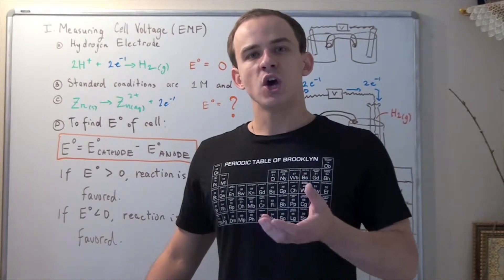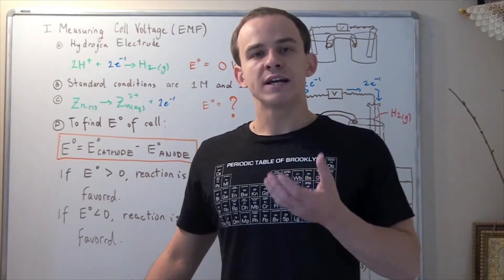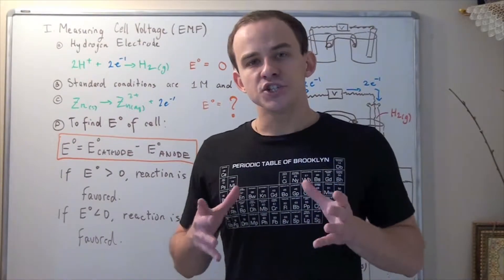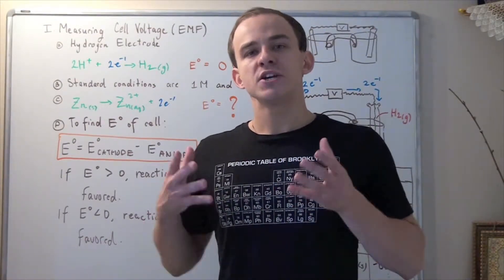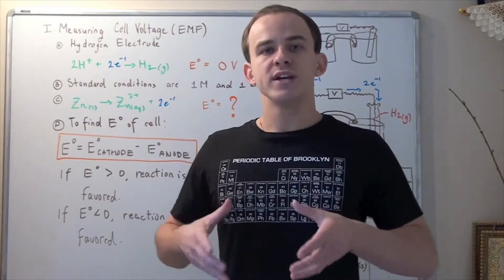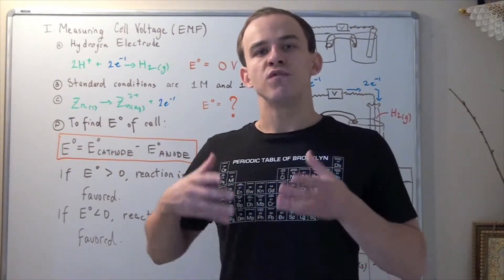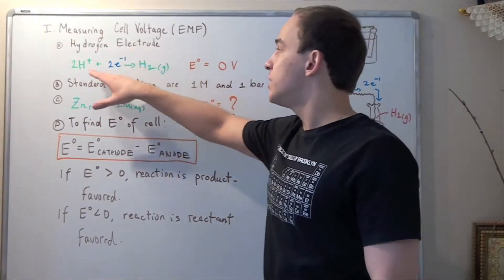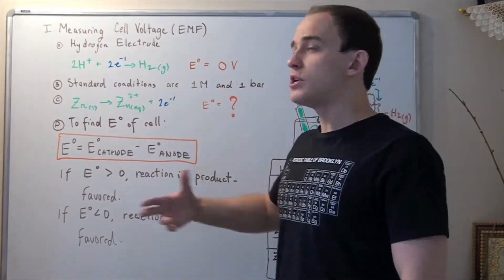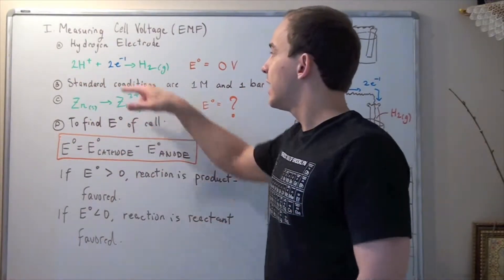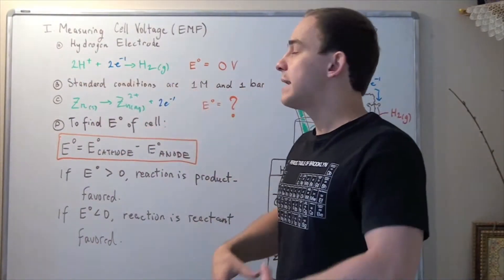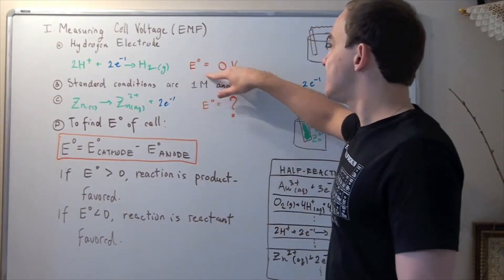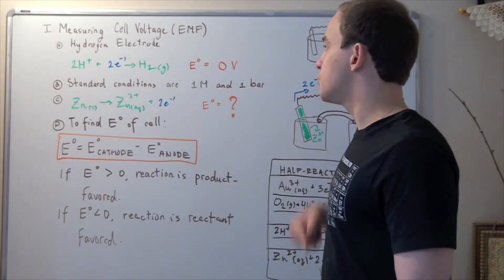From physics, we know that assigning absolute values to electrical potential does not make sense because only changes in electrical potential are measurable. That is why we assign an arbitrary value of zero voltage to the hydrogen electrode reaction. So this reduction reaction in which two H+ ions capture two electrons and produce diatomic H2 gas gets a zero cell voltage.